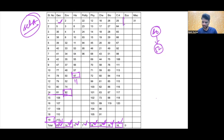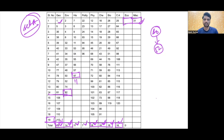Economy se koi bhi question nahi poochha gaya hai. Aur miscellaneous se ek question hai jo ya toh hum usko Science mein daal sakte hain ya Environment mein, par phir bhi mene usko miscellaneous mein rakh liya. Is tarike se yeh break up hai ki kis section se kitne question poochhe gaye hain. Yeh saare question ke serial numbers hain jo mujhe is video ko banane mein help karenge.